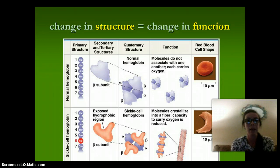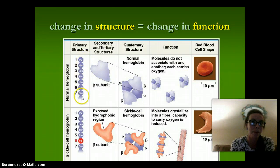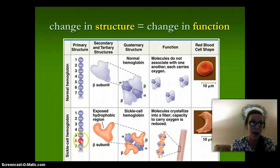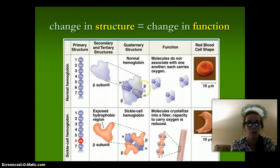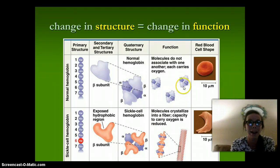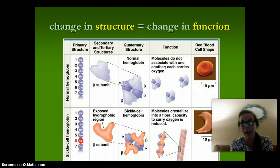One example would be sickle cell anemia. Normal hemoglobin has a specific primary structure, but the hemoglobin of sickle cell anemia has a changed amino acid at the sixth position — here we have GLU, and in sickle cell it becomes VAL, which is valine. This changes the structure and the folding of the red blood cell. Since the shape of the blood cell is different because of the protein, the molecules aren't going to carry oxygen the same way as a regular red blood cell. The change of shape changes the function.